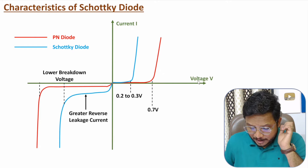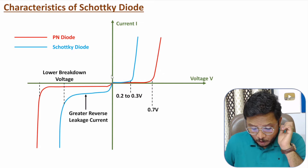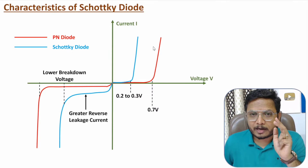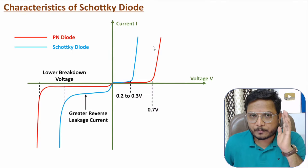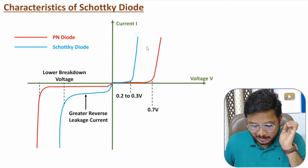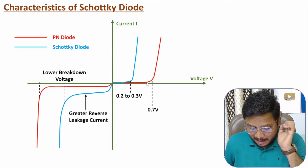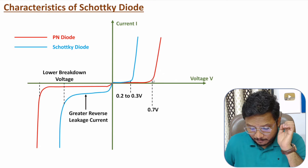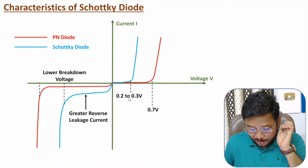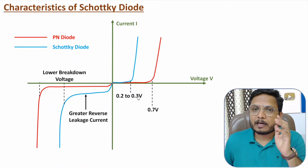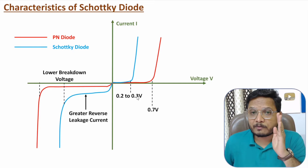On the horizontal axis we have voltage and on the vertical axis we have current. In the first quadrant we have forward bias voltage characteristics, where both voltage and current are positive. In forward bias, the PN junction diode has a forward drop voltage of 0.7 V, while the Schottky diode is typically around 0.2 V to 0.3 V. Because of this, there is less power loss in forward bias with the Schottky diode.